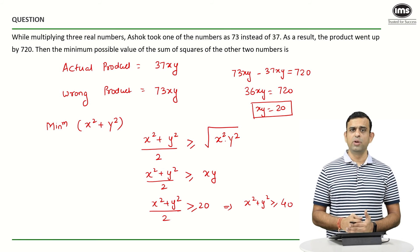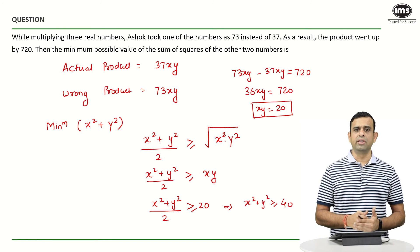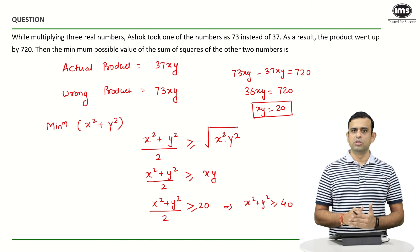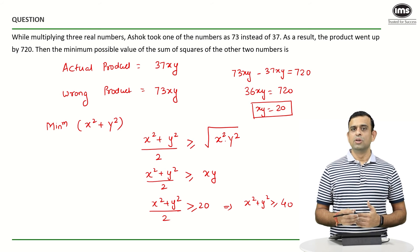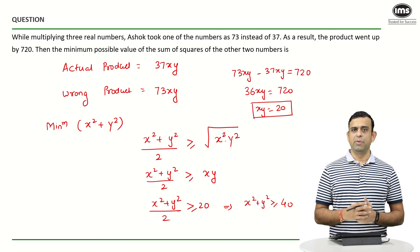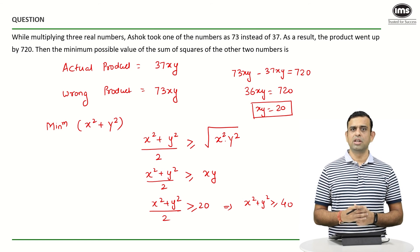And this simply means one thing, that the least value of x² + y² happen to be 40 in this particular case. So a straightforward sum applying the concept of AM ≥ GM, one can easily crack this particular question. So now kindly give it a try to the replica question and put your answer in the comment section.